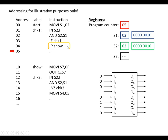Next is an example of an unconditional jump. It doesn't matter what the results of previous operations were — it will always execute. Jump to show: 'show' is at address one zero, so this instruction loads the program counter with address one zero relating to the label 'show'. The next instruction carried out is there — we load S7 with 0F and copy that to the output.